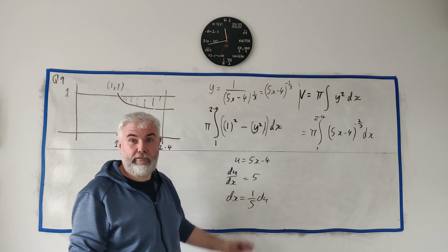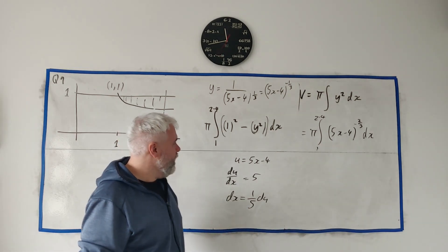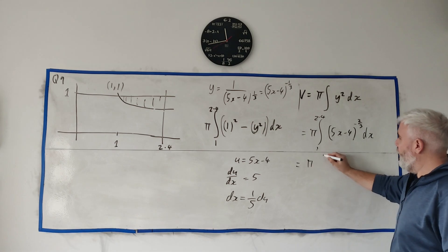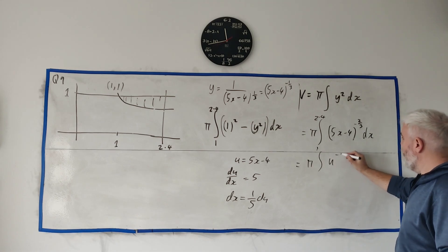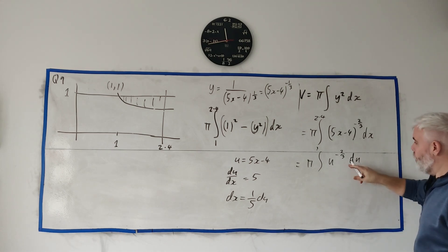So instead of this question we would get pi the integral of u to the power of minus 2 over 3, and instead of dx we'd have du with a 1 over 5 appearing.